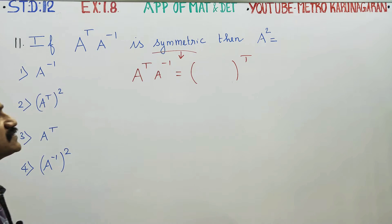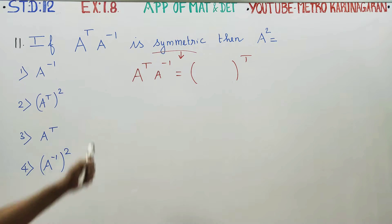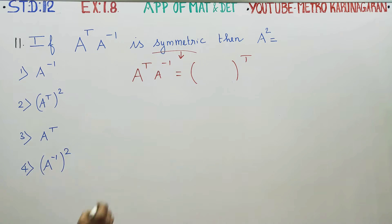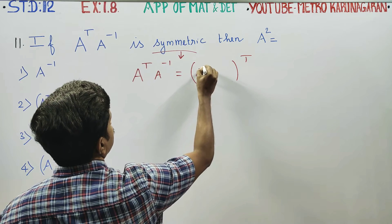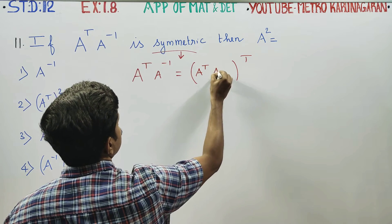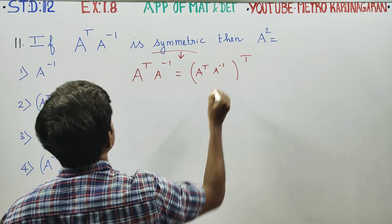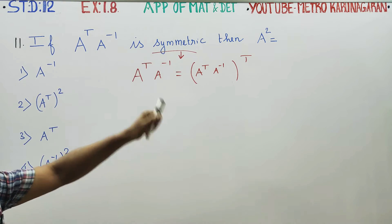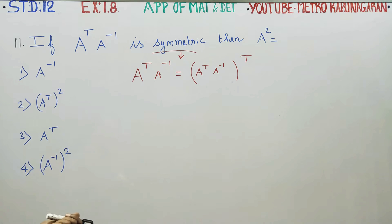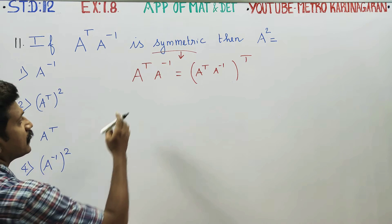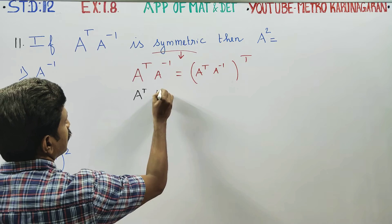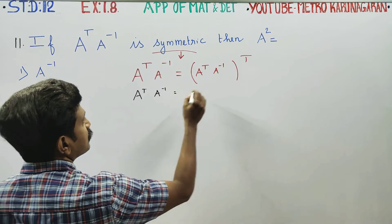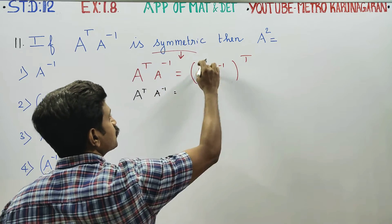If two matrices are symmetric, the matrix answer is equal to A transpose into A inverse. If A transpose into A inverse is equal to A transpose into A inverse.